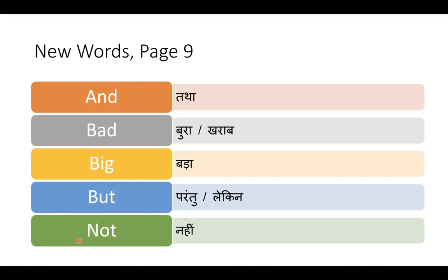Next word: not — n-o-t, not. Not ka matlab na ya nahi. Ab phir se ye words ki revision karte hain: and — tatha ya aur; bad — bura ya kharaab; big — bada; but — parantu ya lekin; not — nahi.